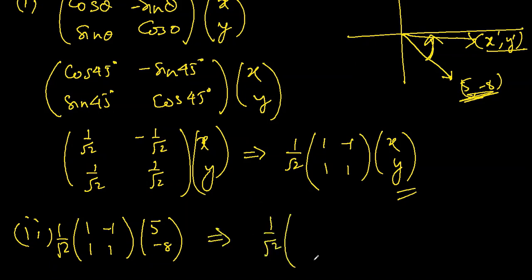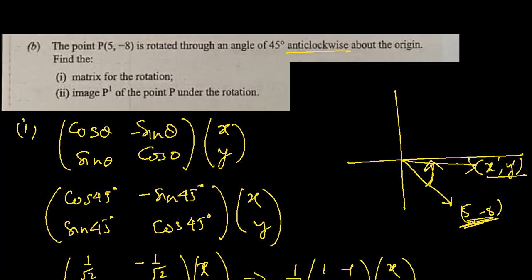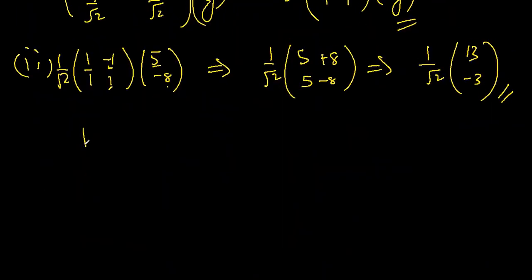So 1 times 5 is 5, minus 1 times minus 8 is plus 8, and 5 times 1 is 5, 1 times minus 8 is minus 8. The final answer will be 1 over square root 2 times (13, -3). If we want the coordinates, p prime will be 13 over square root 2, minus 3 over square root 2. These are the coordinates of the image.